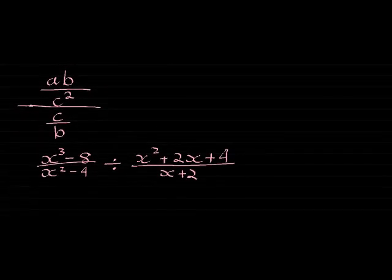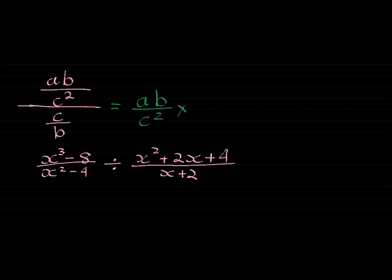Even if you don't fully understand why it's true, the method is simple — but I do urge you to try and understand. So, to simplify: ab over c squared divided by c over b. I tip and times, so c over b becomes b over c, and I multiply instead. Can I cancel anything? No. So I multiply: numerators give ab squared, denominators give c cubed.